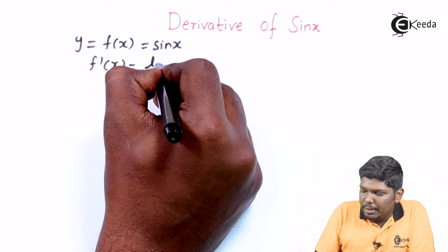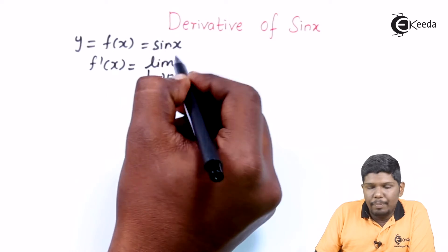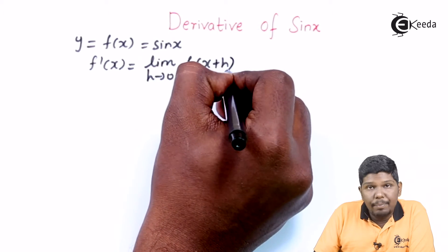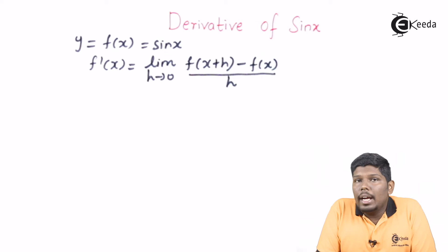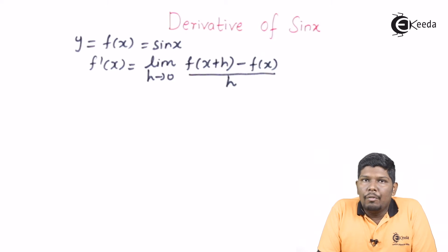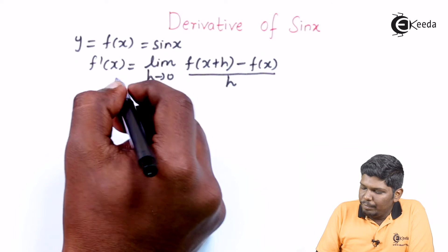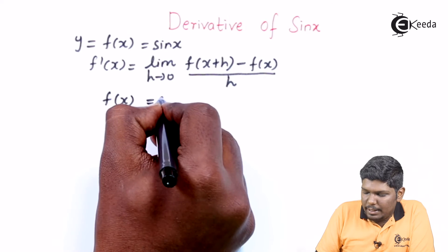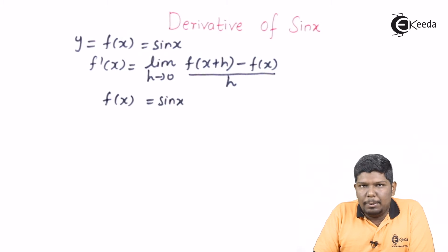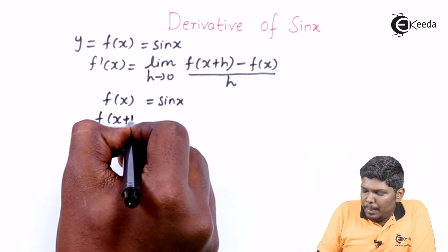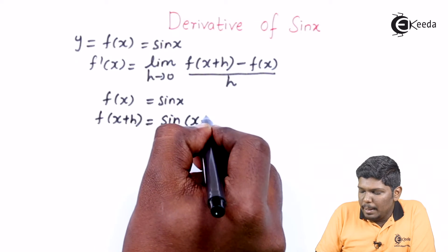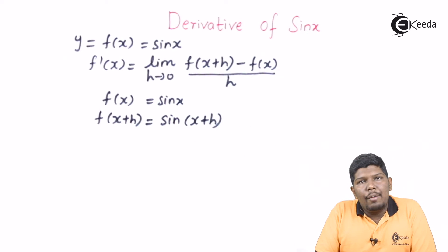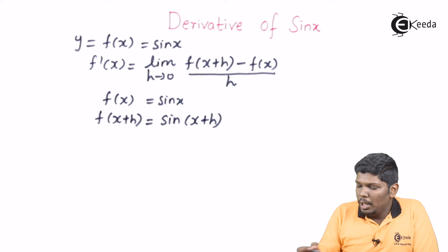The formula goes: f dash X is equal to limit h tending to 0, f of X plus H minus f of X, upon H. Here f of X is given as sine X. For f of X plus H, we replace X by X plus H, so f of X plus H becomes sine of X plus H.